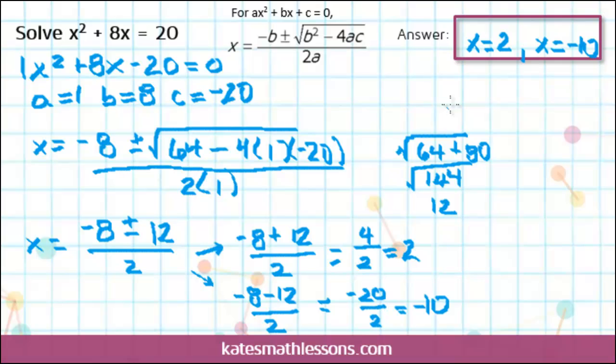You can always check your answer with a quadratic by plugging your values back in. So in this case, you'd plug in the x values and make sure they come out to 20. This is a little bit easier to do because our answers came out to whole numbers. So I could check it 2 squared is 4. 8 times 2 is 16. 4 plus 16 does equal 20.